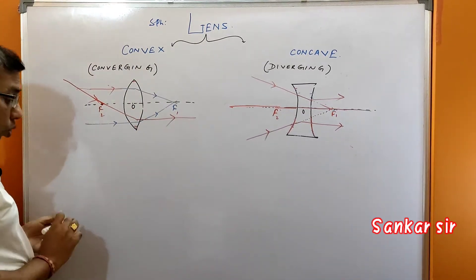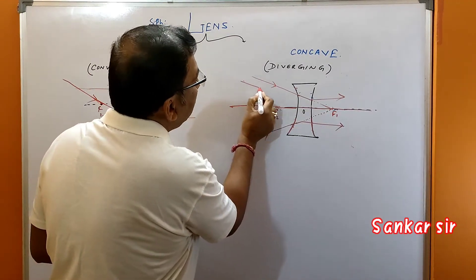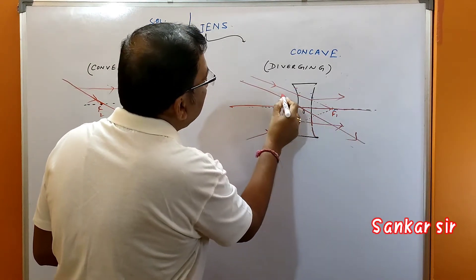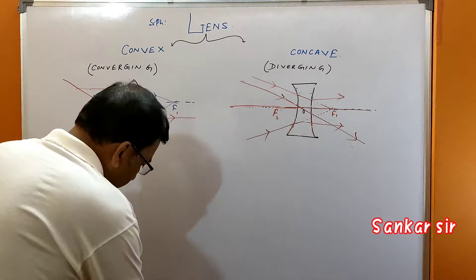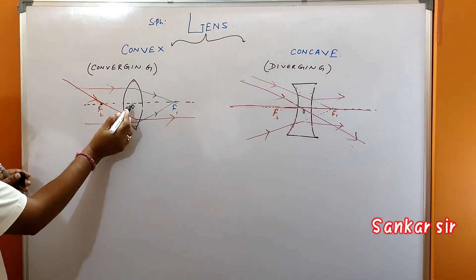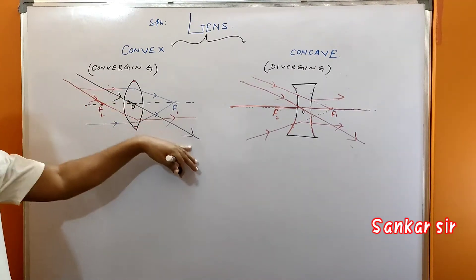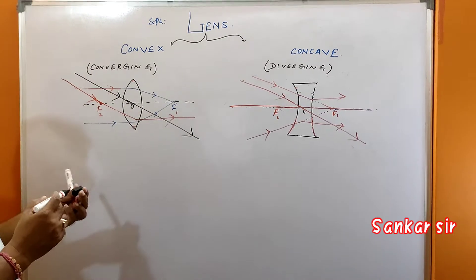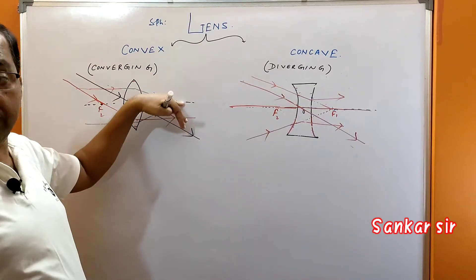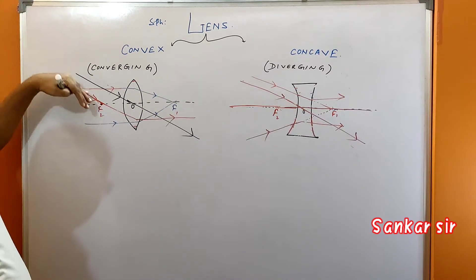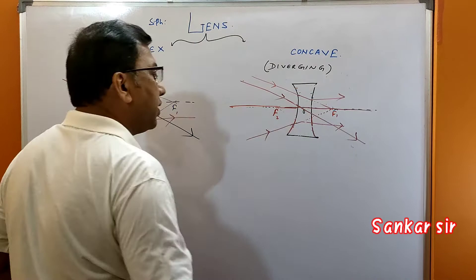Third rule: if a ray of light goes to the optical centre, it will go straight forward — no deviation, no diffraction will take place. Same rule applies on the other side: if a ray of light goes towards the optical centre, it will pass through without any deviation, going straight forward. So in summary, just like a mirror — parallel to principal axis goes to focus; through focus goes parallel; through optical centre goes straight forward.